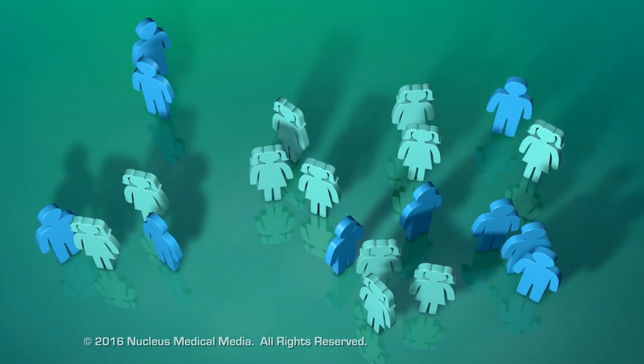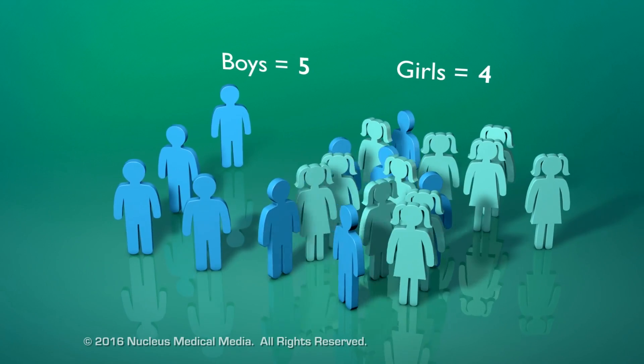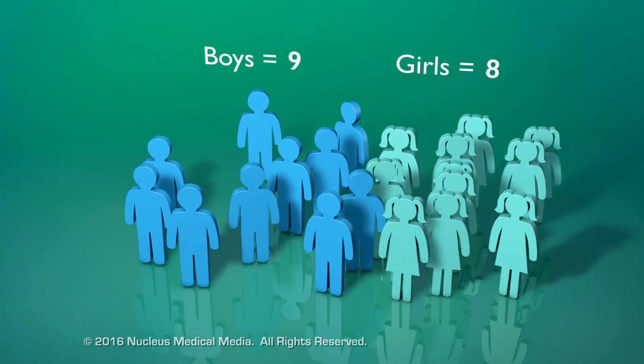For example, recording quantitative data can be as simple as counting specific things, such as the number of boys in your class compared to the number of girls.